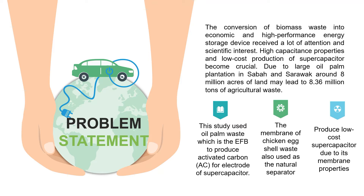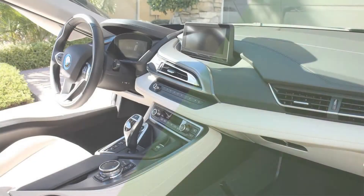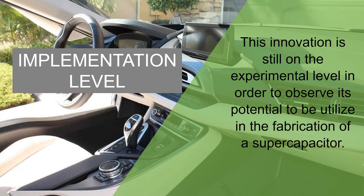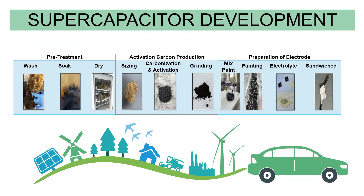This study used oil palm waste, specifically EFB, to produce activated carbon (AC) for the electrode of a supercapacitor, aiming to produce a low-cost supercapacitor. Due to its membrane properties, the implementation level of this innovation is still at the experimental stage in order to observe its potential for use in supercapacitor fabrication.